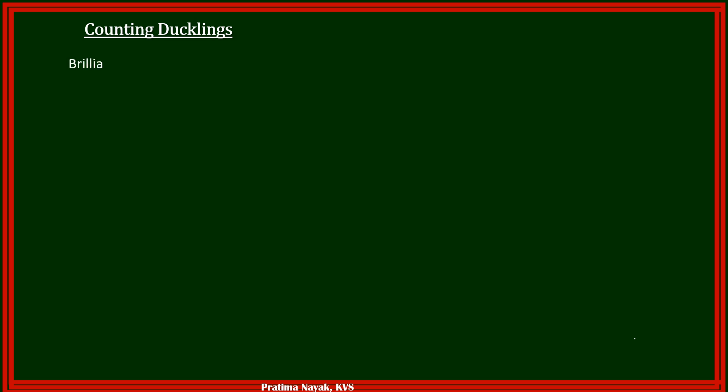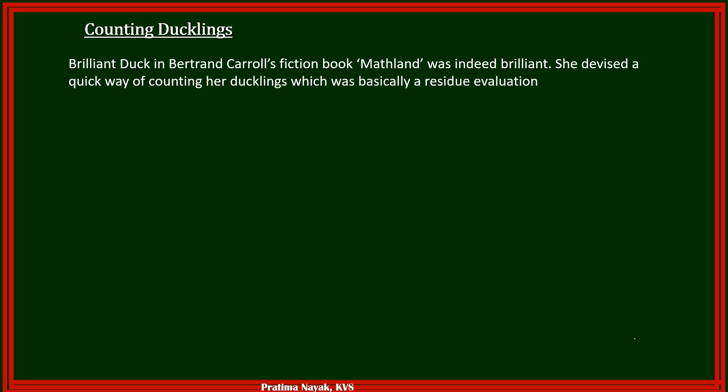This is a problem from Bertrand Carroll's fiction Mathland where brilliant duck is represented as a character which is very intelligent. She devised a quick way of counting her ducklings which was basically a residue evaluation process after division separately by 5, 3 and 11.